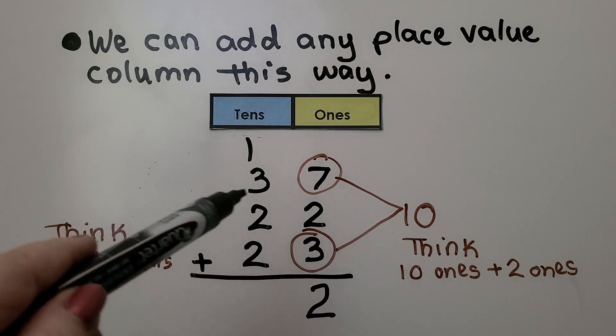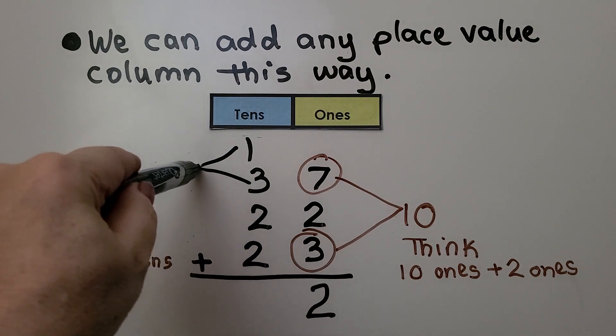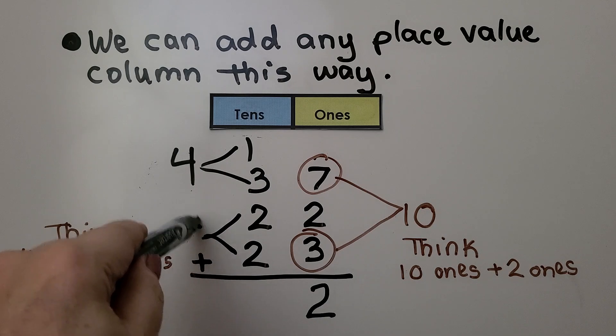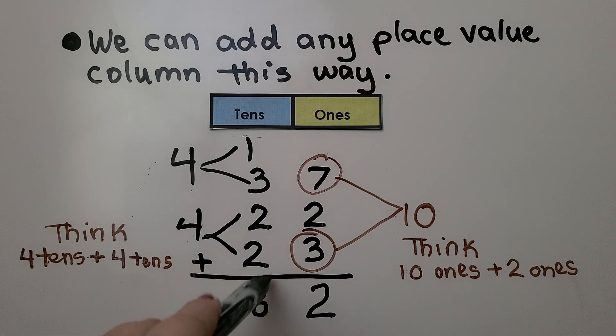Here we can make a 4, and here we can make another 4. 4 plus 4 is 8 tens. It's equal to 82.